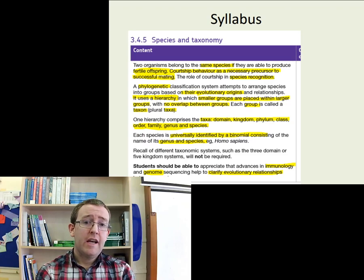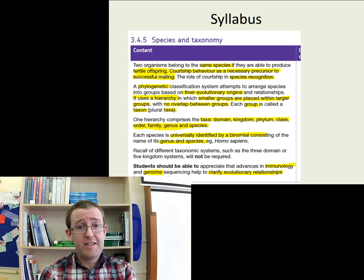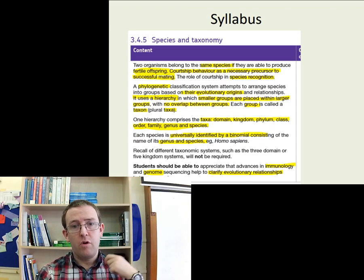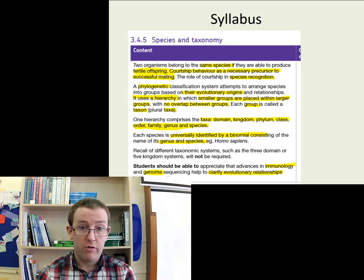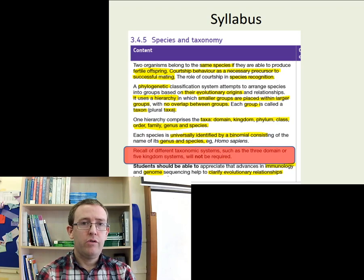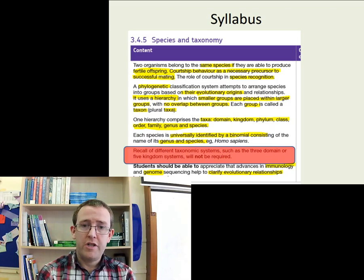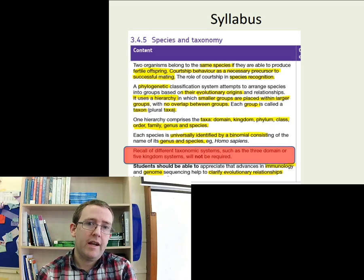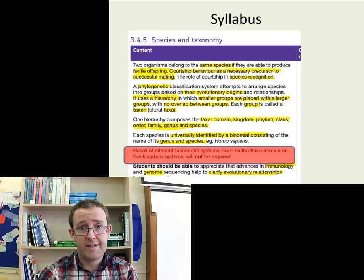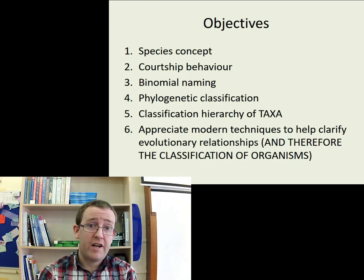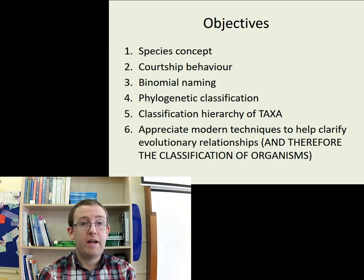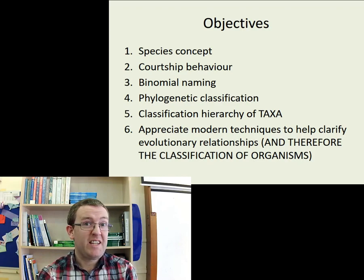Here's the syllabus. As you can see, you need to know a lot of the same stuff as you knew for GCSE: your binomial, courtship behaviour, and phylogenetic trees. There's a little bit more about the evolutionary origins and genetics. Interestingly, you are not expected to talk about the three-domain system, which you were at GCSE — it obviously still exists, it's just the A-level syllabus has chosen not to focus on that. So what we're going to cover is: the species concept, courtship behaviour, binomial naming, phylogenetic classification, hierarchical taxa, and how modern techniques — basically DNA and genetics — help clarify relationships.